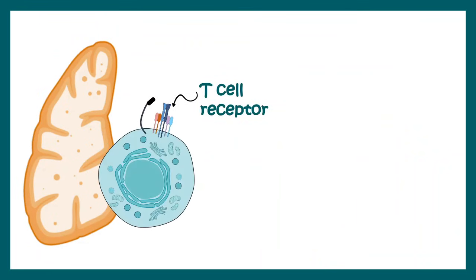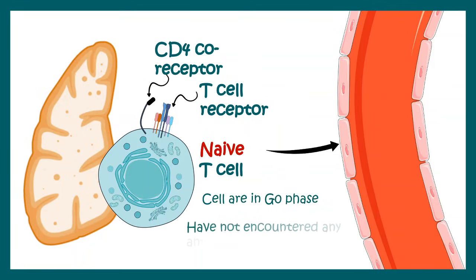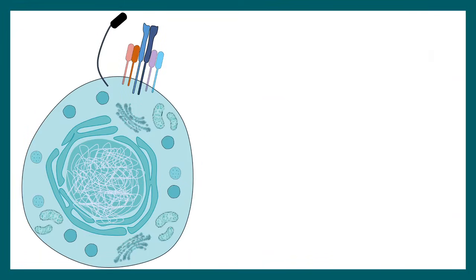Once these T cell precursors leave the thymus, they have T cell receptors and a co-receptor — in this case CD4. But these cells are actually naive T cells, meaning they have not encountered any antigen so far and they are in a quiescent state — that means in G0 phase. These T cells are circulating.